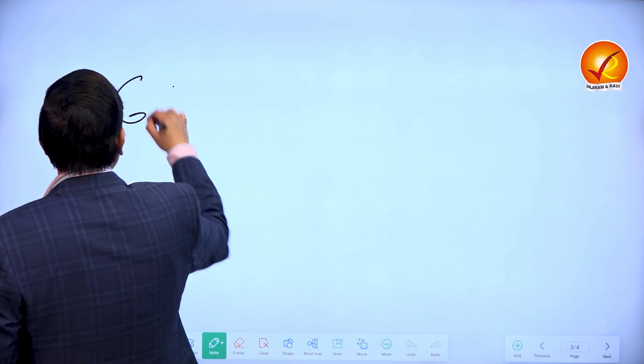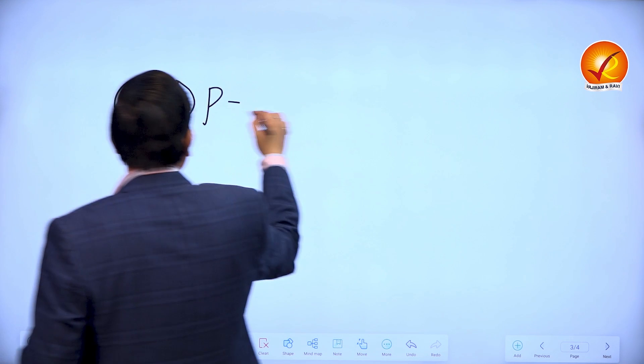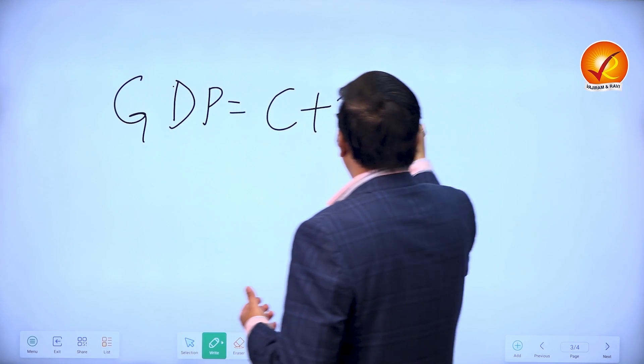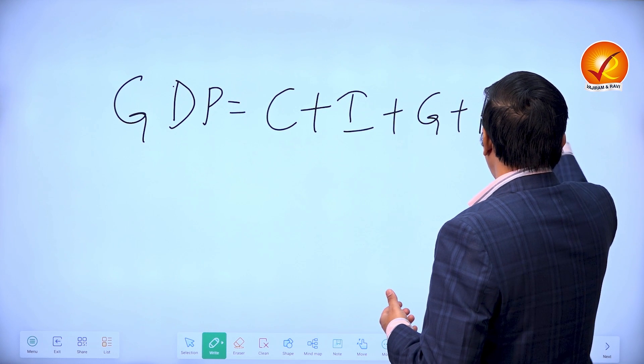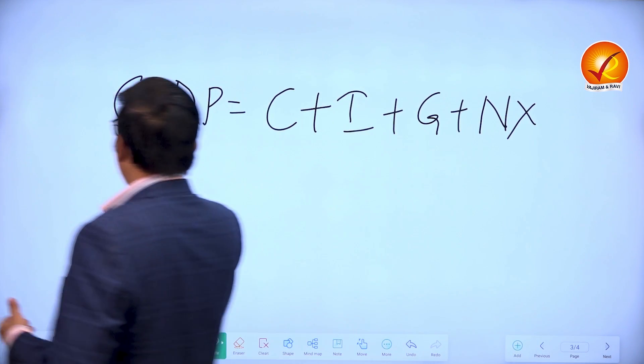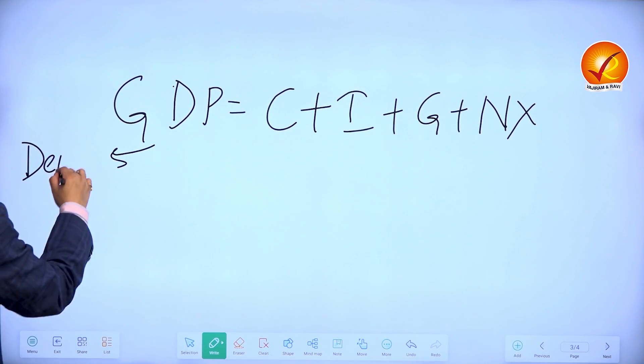So from demand side, GDP can be given as the sum of C plus I plus G plus NX. This is often called the demand side of GDP.